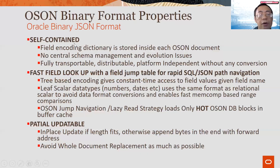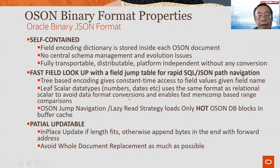Having covered the use cases, let's see how OSON binary really supports that. First of all, OSON binary is self-contained — the field name dictionary is embedded in each OSON document, so there are no central schema management or evolution issues. OSON is fully transportable, distributable, and platform-independent without any conversion. The key thing that makes OSON unique is its field jump navigation table, which allows rapid SQL/JSON path navigations. Unlike other binary formats like BSON or JSON text where you have to stream-read through all bytes, OSON does jump navigation and lazy reads, only loading the hot OSON data blocks in the buffer cache for the JSON components you actually need.